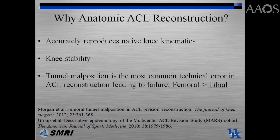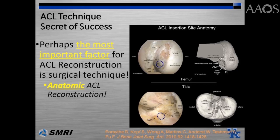Anatomic ACL reconstruction accurately reproduces native knee kinematics and allows for knee stability both in the sagittal plane and rotationally. Tunnel malposition is the most common technical error in ACL reconstruction leading to failure, with an anterior femoral tunnel being the most common type of malposition. Anatomic placement of the graft and tunnels is perhaps the most important factor for a successful ACL reconstruction.